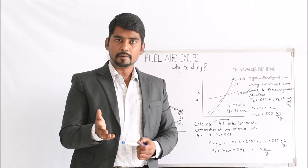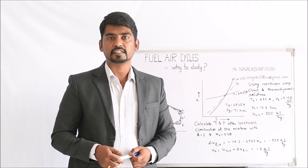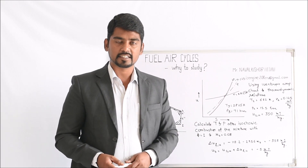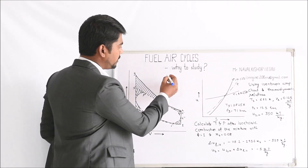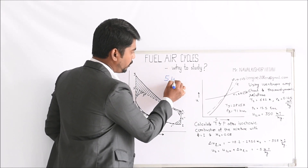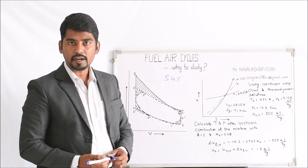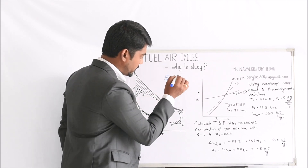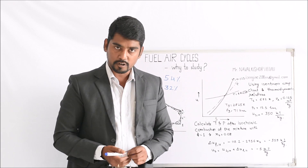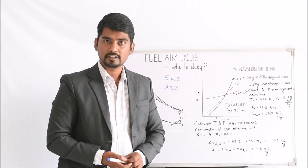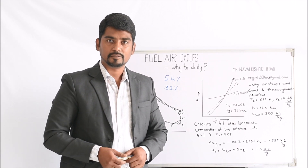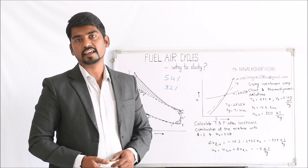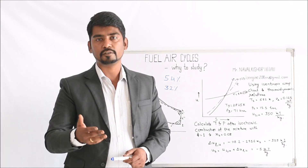When we consider an example of an IC engine having the compression ratio as 8, as per the air standard cycle the thermal efficiency comes around 54%, but for the actual SI engine the thermal efficiency comes around 32%. So there is a gap of almost 22%. What is this gap and why is this gap coming?